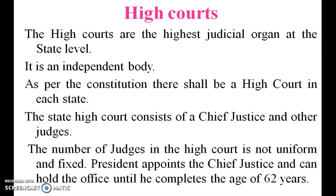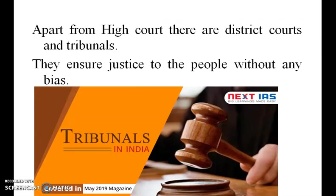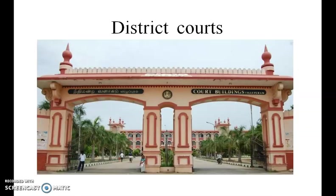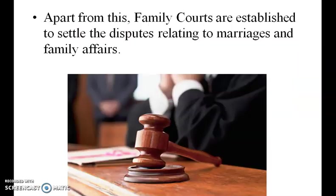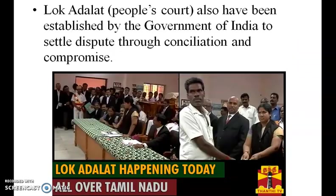The number of judges in the High Court is not uniform or fixed. The President appoints the Chief Justice, who can hold office until completing the age of 62. Apart from the High Court, there are district courts and tribunals — they ensure justice to each person without any bias. This is a district court.